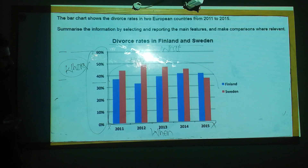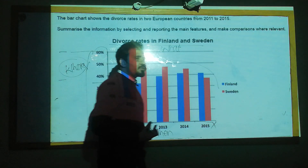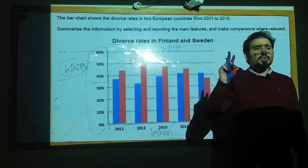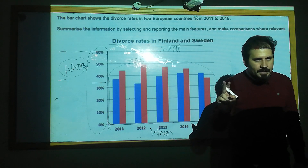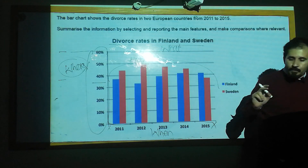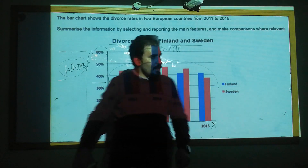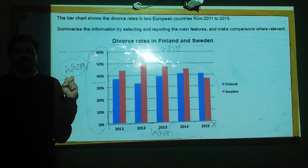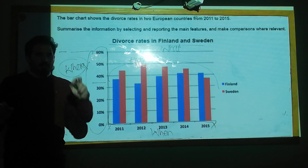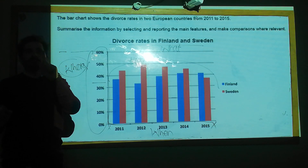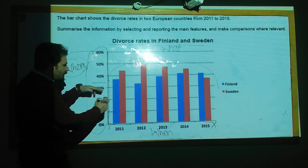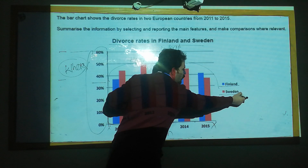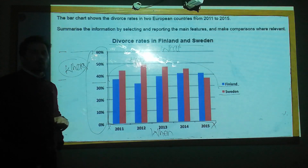If you want to write down supporting overview paragraphs, we can write two supporting overview paragraphs. To explain this graph, there are two ways: one supporting overview paragraph you can write about Finland's line, and the second supporting overview paragraph you can write about Sweden.